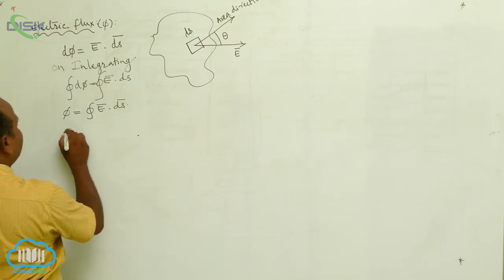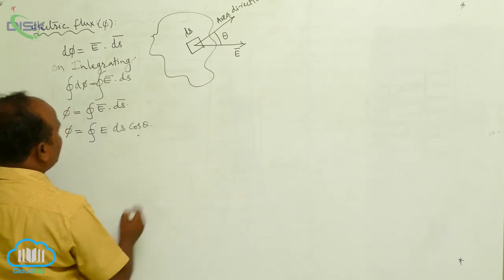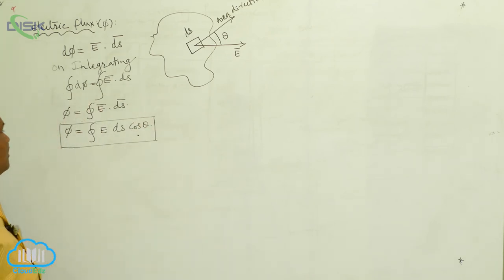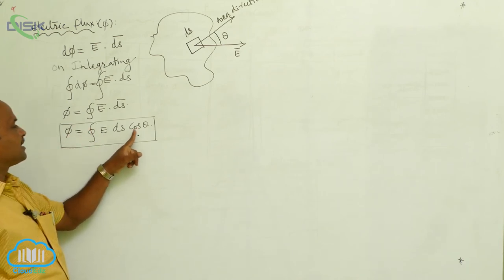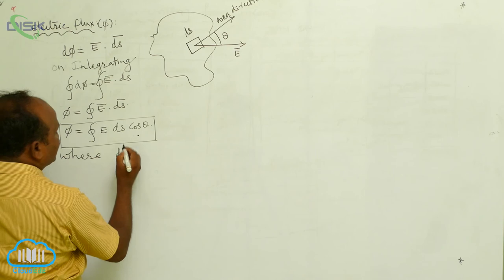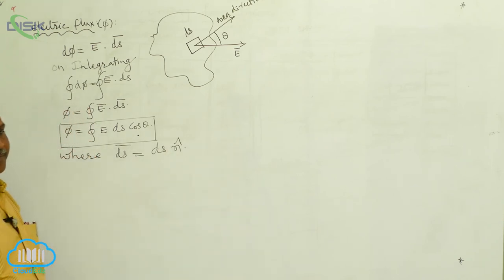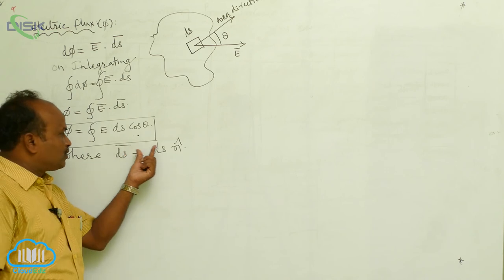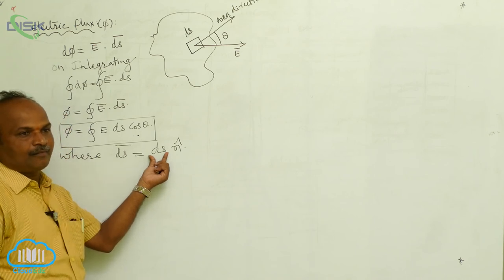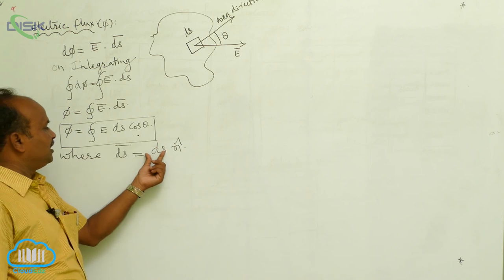Now, phi may be written as the closed integral of E dS cos theta. Therefore, the total flux through any closed surface is: phi equals the closed integral of E dS cos theta. Here, dS bar equals dS into the unit vector n-hat. That is, dS is the area magnitude and n-hat is the unit vector of the area direction. Thereby, dS bar equals dS into n-hat.